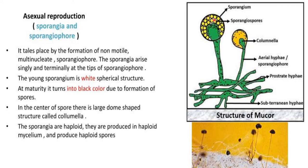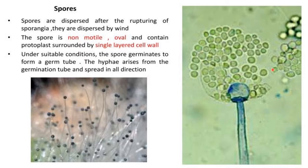The sporangia are haploid, and they produce haploid spores because they are formed from the haploid mycelium. Spores are dispersed after rupture of the sporangia and are dispersed by wind. The spores are non-motile, oval, and contain protoplast surrounded by a single layer of cell wall. Under suitable conditions, the spores germinate via a germ tube, and hyphae arise and spread in all directions.